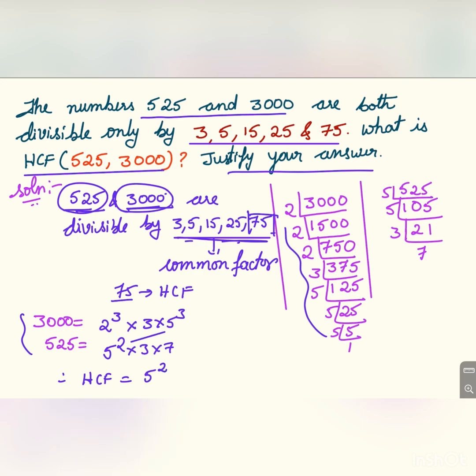5 square is the highest common factor, and 3 is the highest common factor between these two sets of factors. Now, 5 square is 25 into 3, that is 75. The HCF of the given numbers is equal to 75.